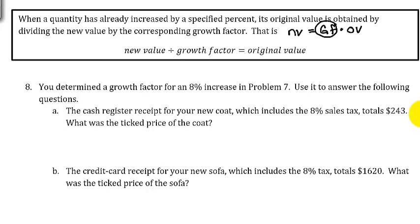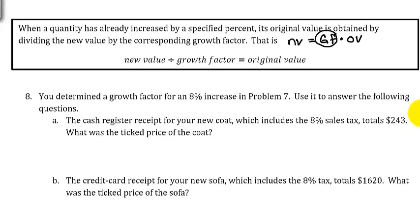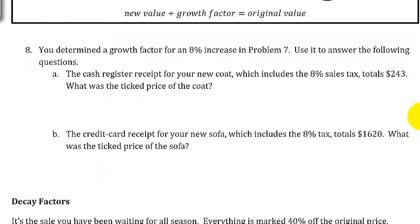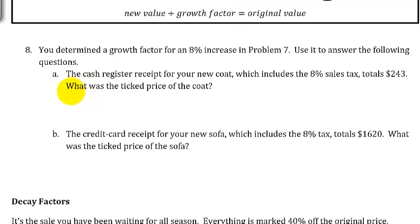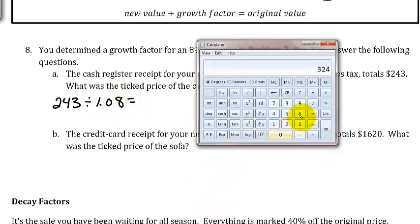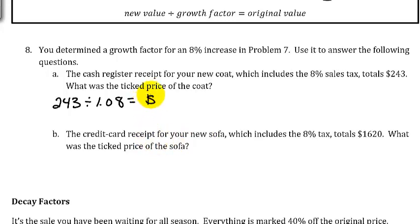Using the growth factor of 1.08 for an 8% increase: the cash register receipt for a new coat, which includes 8% sales tax, totals $243. What was the ticketed price of the coat? Take $243 and divide it by the growth factor 1.08, and we get $225.